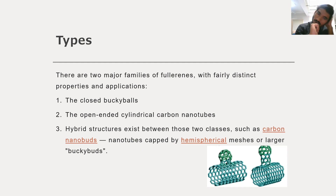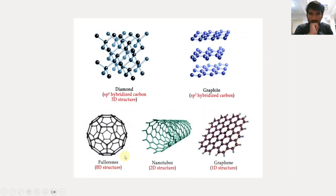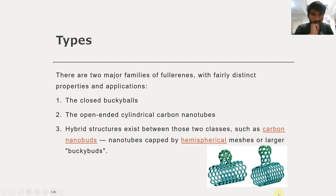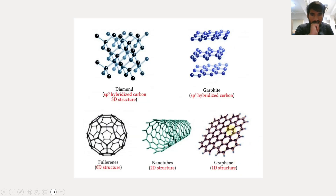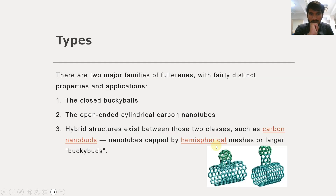What are carbon nanobuds? When nanotubes are capped by hemispherical meshes or larger buckyballs, the resulting structure is called a carbon nanobud. As you can see, a carbon nanotube with a bud around it is an example of a carbon nanobud. So, in summary: buckyballs, nanotubes, nanobuds, and graphene are all considered members of the fullerene family.